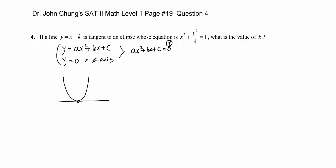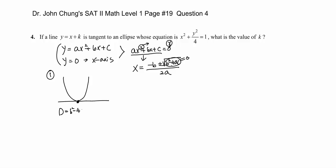We have three different cases. The first one: they are tangent. That means the quadratic formula gives negative b plus or minus square root of b squared minus 4ac over 2a. To have only one value — because normally a quadratic has two intersections — this discriminant b squared minus 4ac must be zero.